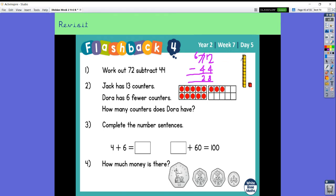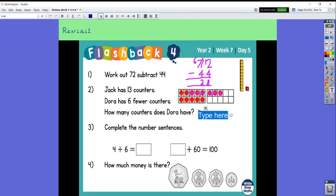I could have done it using my rods and sticks as well to help me. So question two. Jack has 13 counters. Dora has six fewer counters. How many counters does Dora have? So if Dora's got six fewer I need to take away six. I'm just going to cross six off. So I've crossed off three, four, five, six. So I can see that Dora has seven counters. And I'm going to write that as a sentence. Dora has seven counters because writing seven on its own wouldn't make sense.